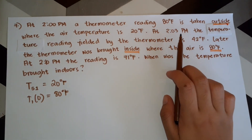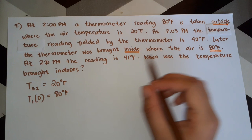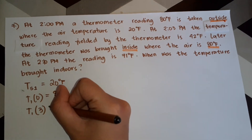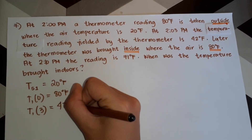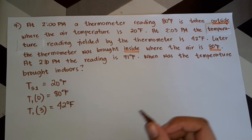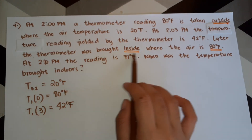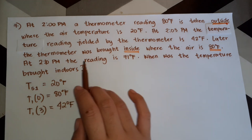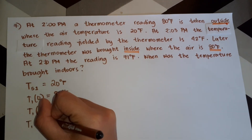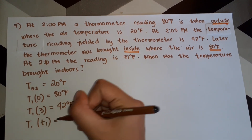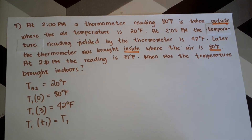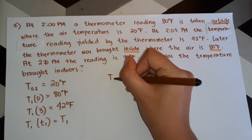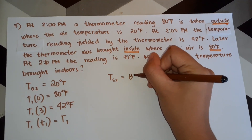At 2:03 PM — that is 3 minutes after time zero — the temperature reading is 42 degrees Fahrenheit, so T1 at t equals 3 minutes is 42 degrees Fahrenheit. Later the thermometer was brought inside where the air temperature Ts2 is 80 degrees Fahrenheit.